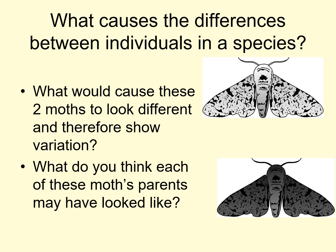So these moths — there are two types: a light moth and a dark moth, and they are both peppered moths. The differences between these two moths, the variation within this species, is going to be down to the genetics. This moth has the gene for lighter coloured skin, and this moth has the gene for darker coloured skin. It's very likely the light moth had light coloured parents, and the dark moth had dark coloured parents.